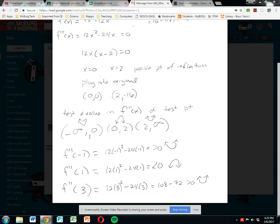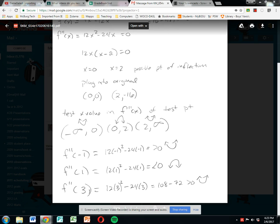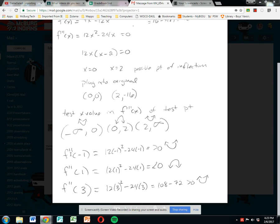So I pick a test point in each one of these intervals. I pick negative one for the smallest one, I pick one for the second one, and I pick three for the last one. And now I plug these in the double derivative.